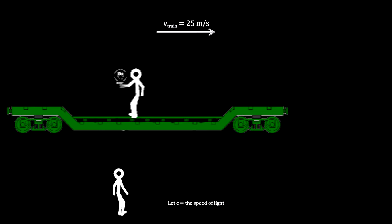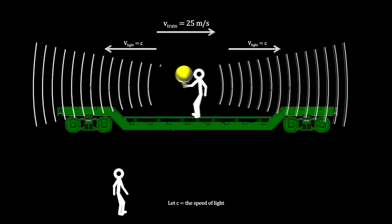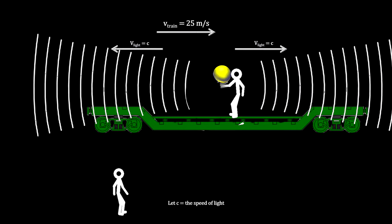It followed that if it were a light bulb that the person on the train turned on, he would see the light moving in the direction of the train and the light moving in the opposite direction of the train to be the same speed of light.